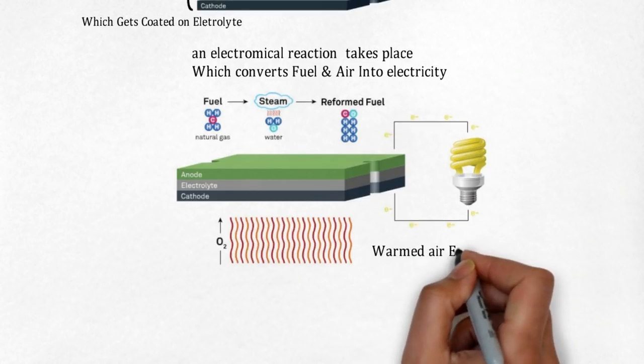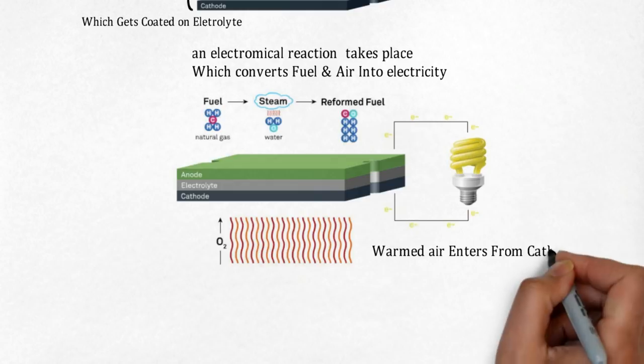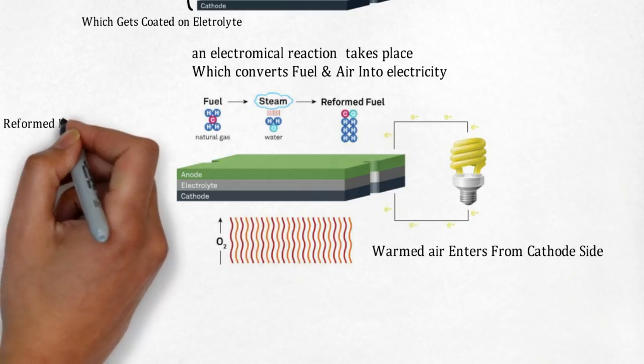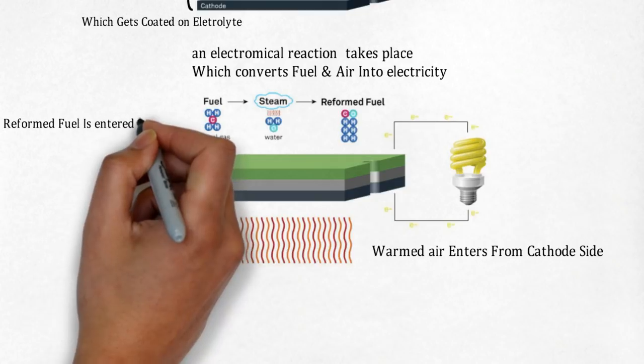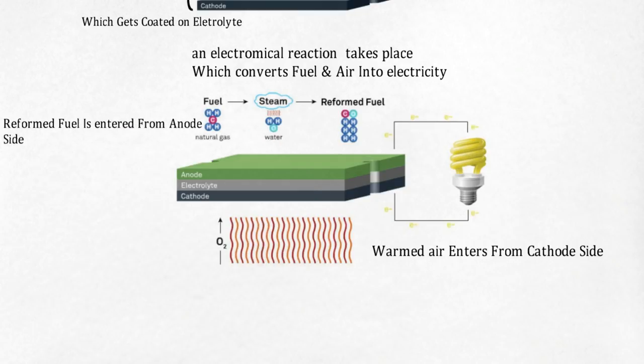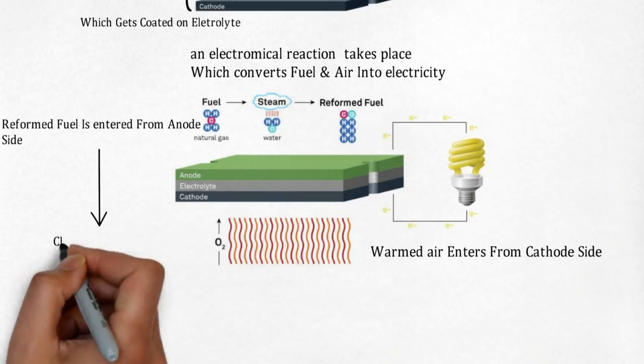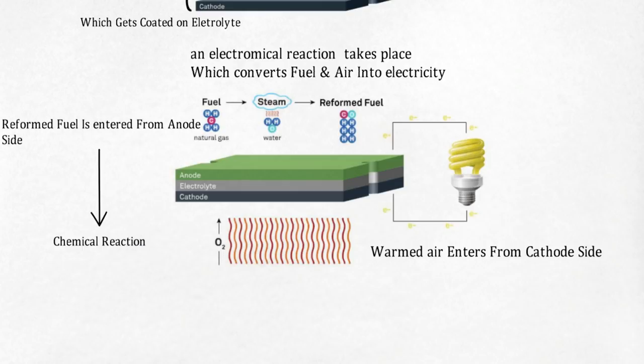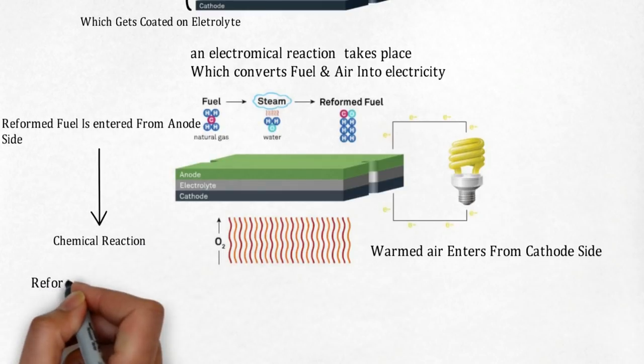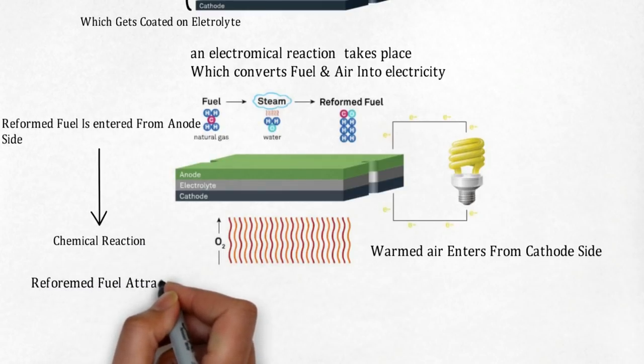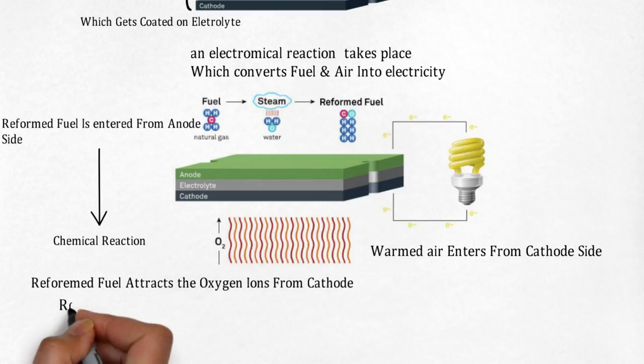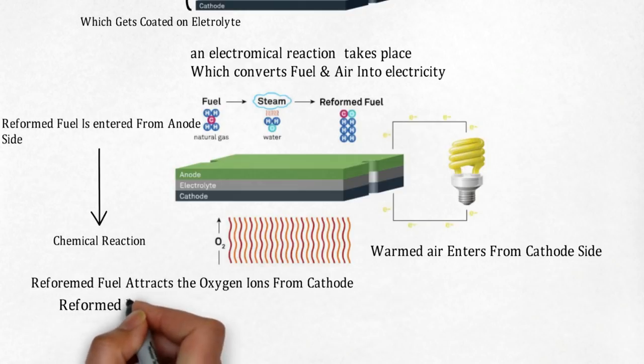In this image it is shown: warm air enters from the cathode side, and reformed fuel, which is a mixture of fuel and steam, comes from the anode side. At that particular point, the chemical reaction takes place at the electrolyte. The reformed fuel attracts the oxygen ions from the cathode.